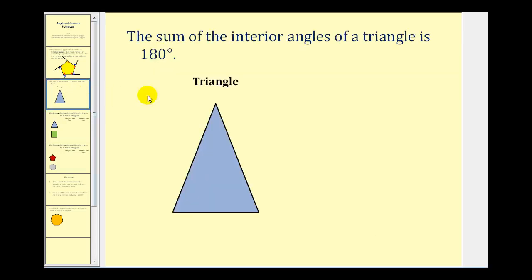Before we talk about the sum of the interior and exterior angles, let's review the sum of the interior angles of a triangle. Remember, the sum of angle one, angle two, and angle three is always equal to 180 degrees. And just to demonstrate this, let's go ahead and take a look at a Wolfram demo.